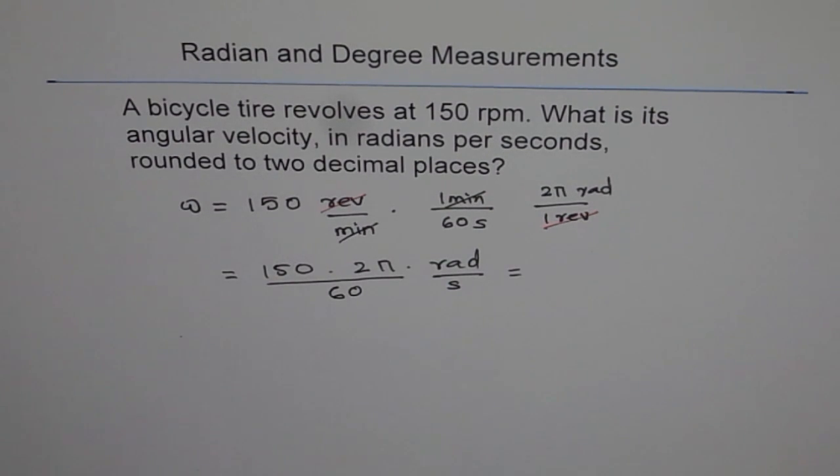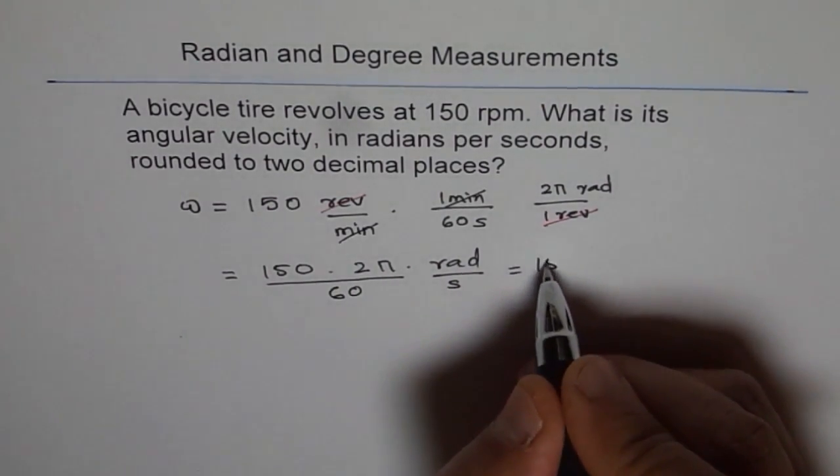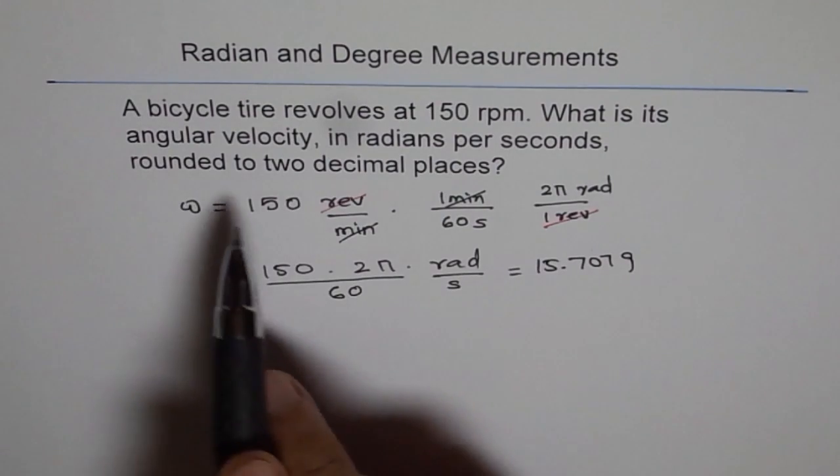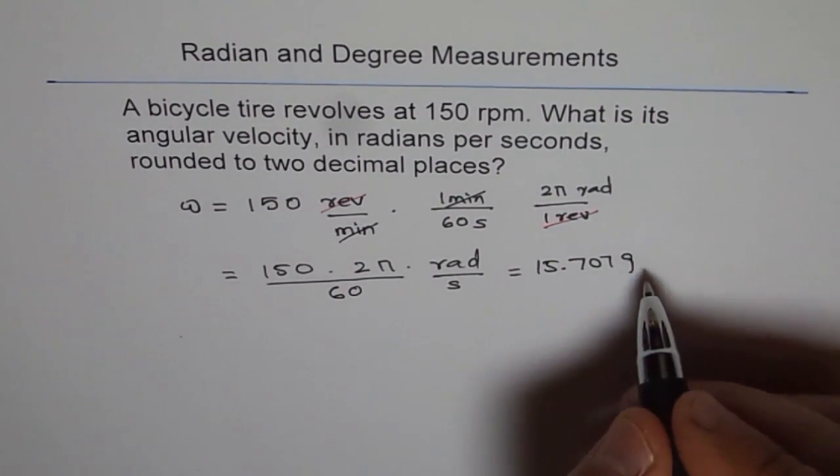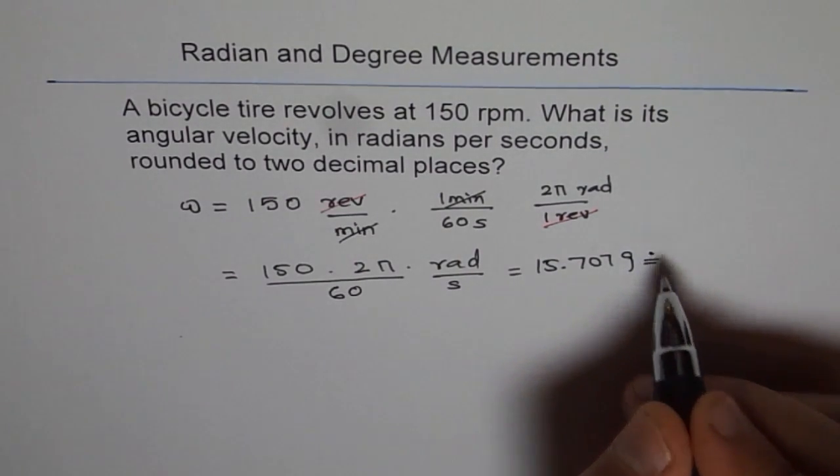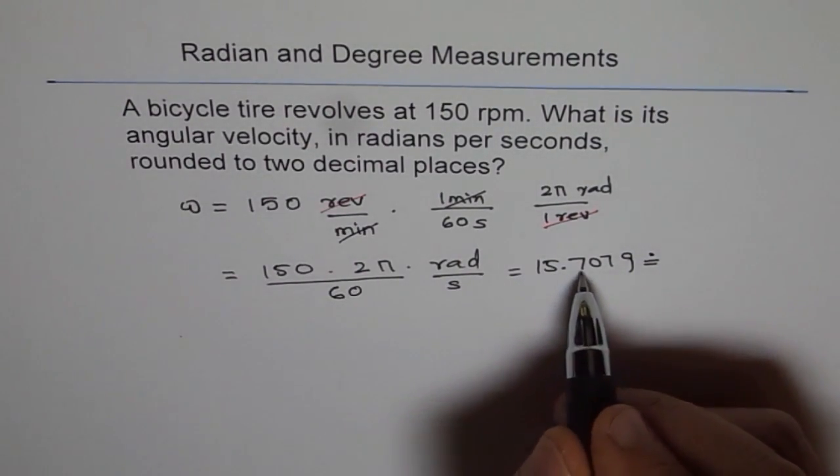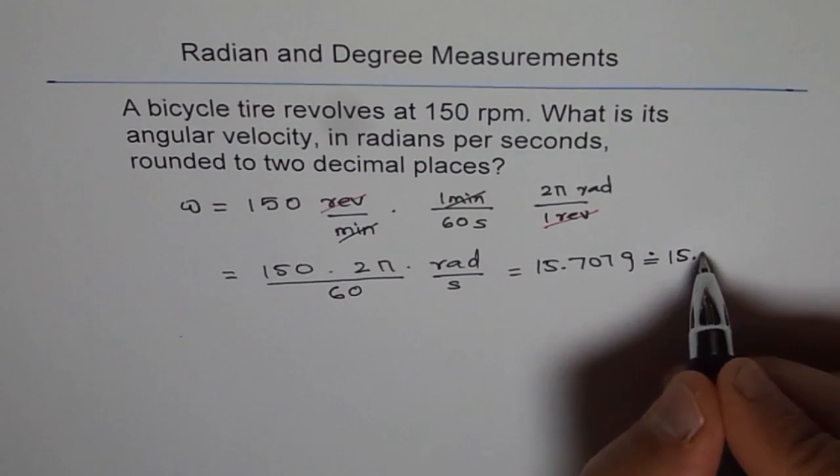It gives me 15.7079. 15.7079. And they need to round to two decimal places. So let's write this to two decimal places which is 15.71. 15.71.